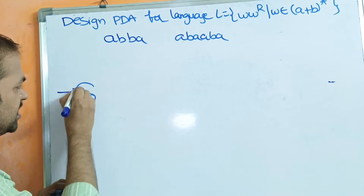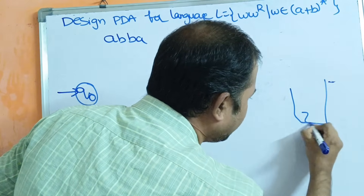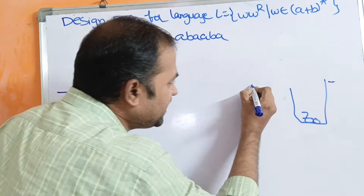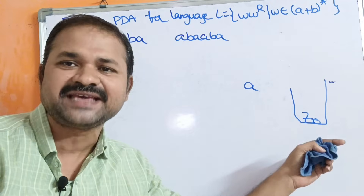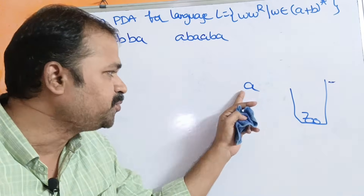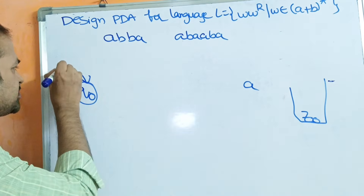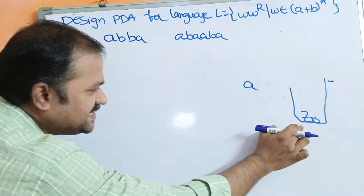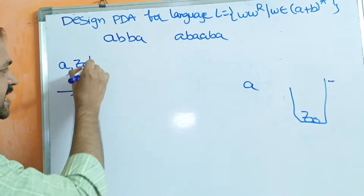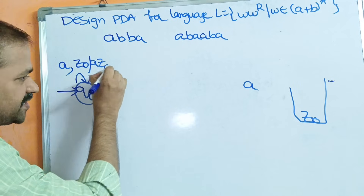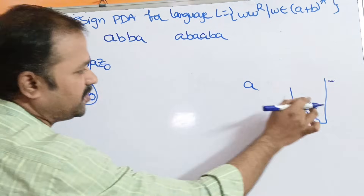Initially we are at state Q0. The stack contains a symbol called Z0. If the input symbol is A and the stack is empty (i.e., top symbol is Z0), then we can push A onto the stack. So Z0 is replaced with AZ0, meaning A is pushed onto the stack. The content of the stack becomes AZ0.